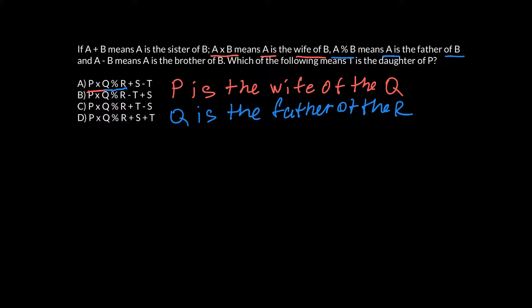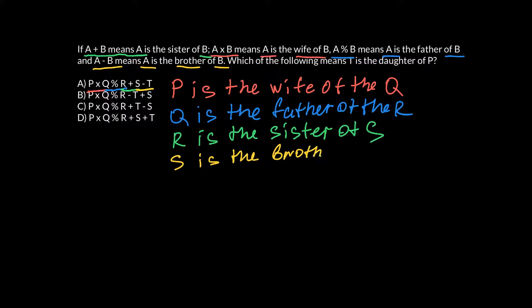And next pair would be R plus S. And what do we have here? That means that the first is the sister of the second. So in our case, R is the sister of S. And the last pair, S minus T. So this means that the first is the brother of the second. So S is the brother of the T.